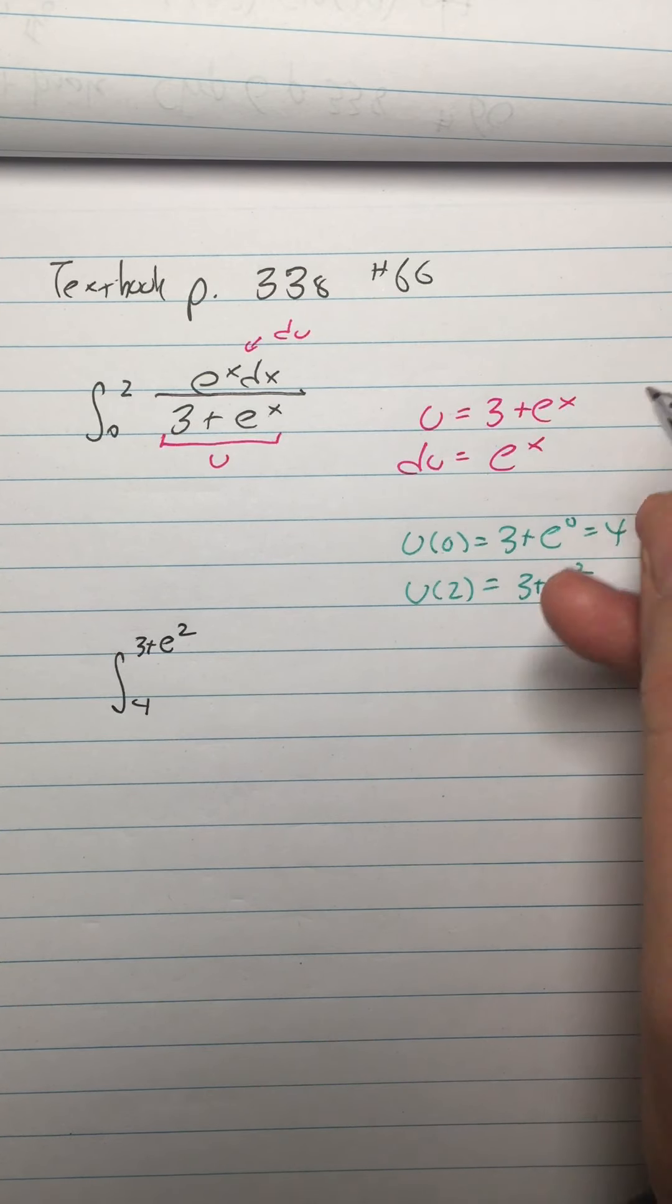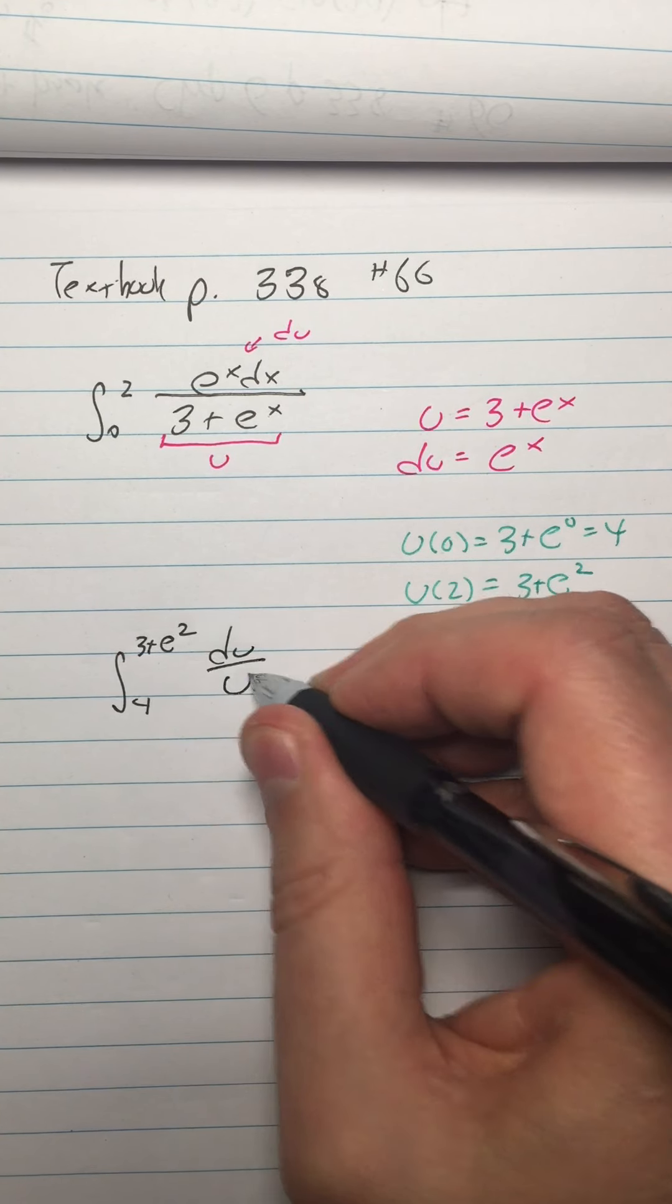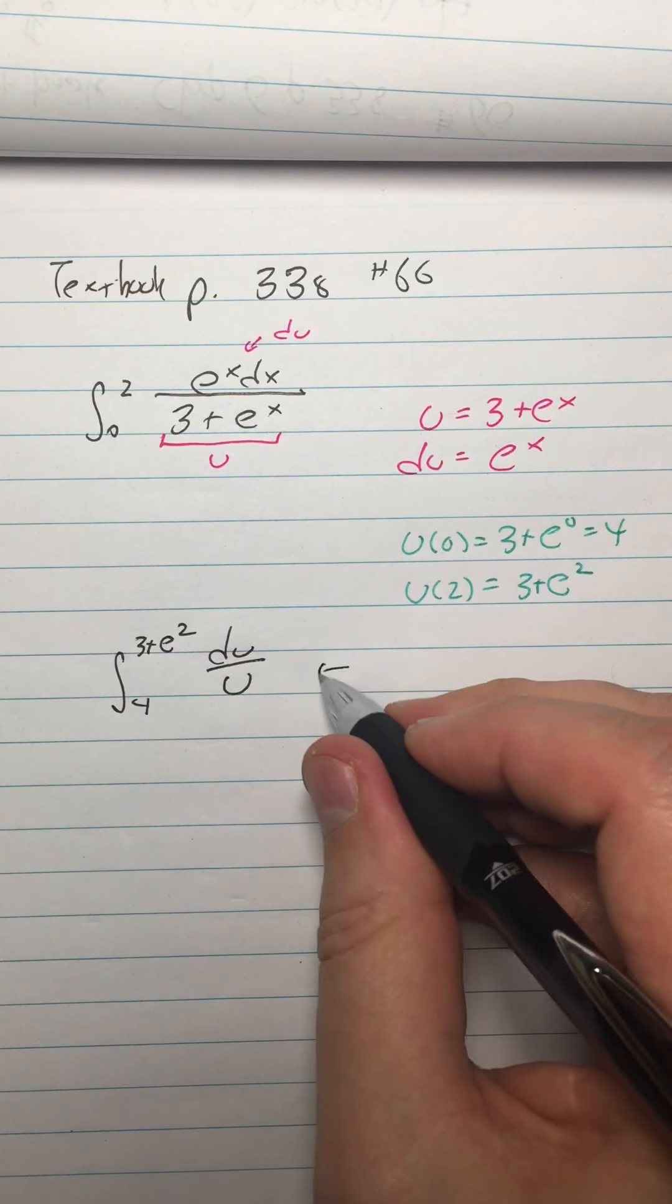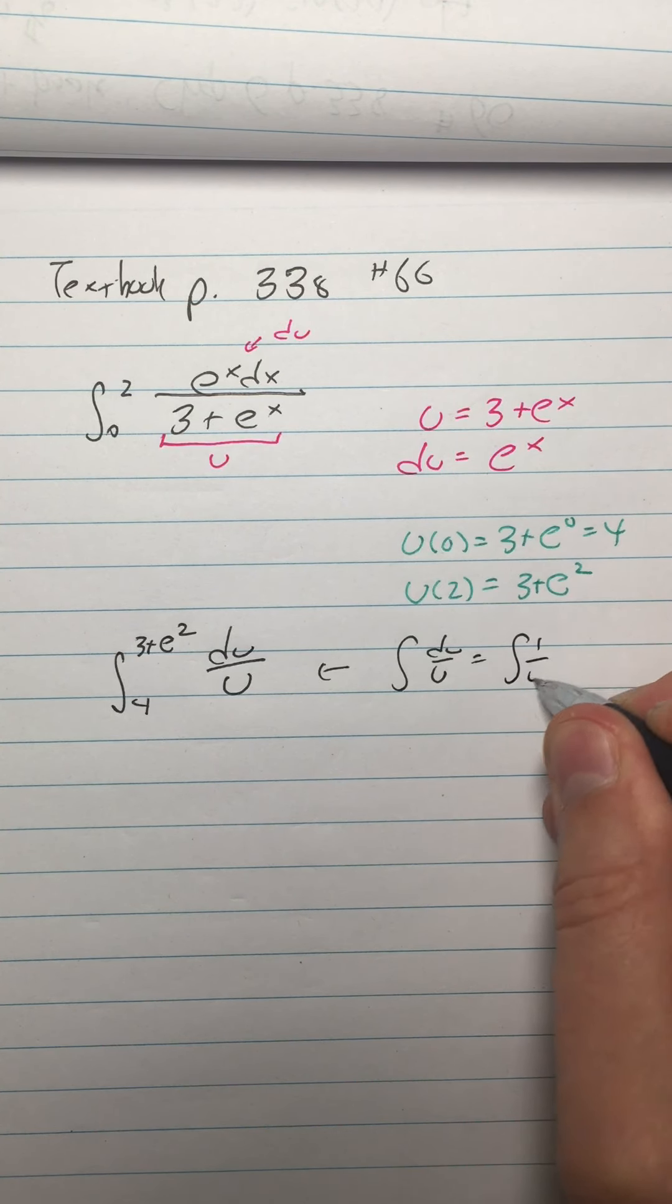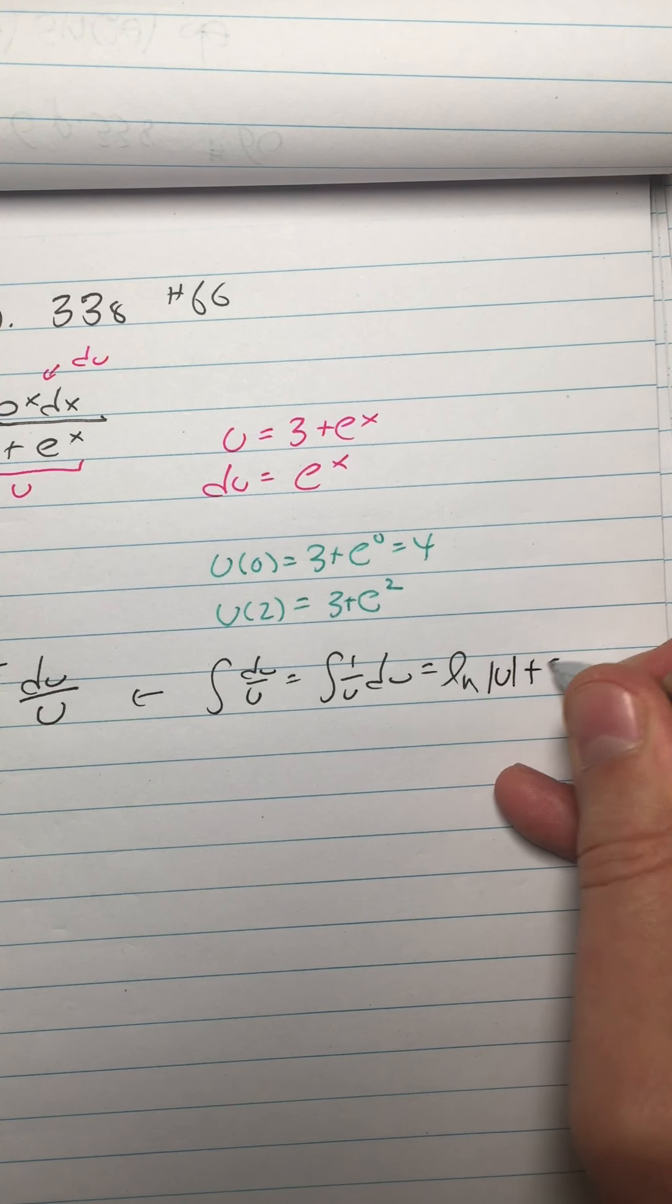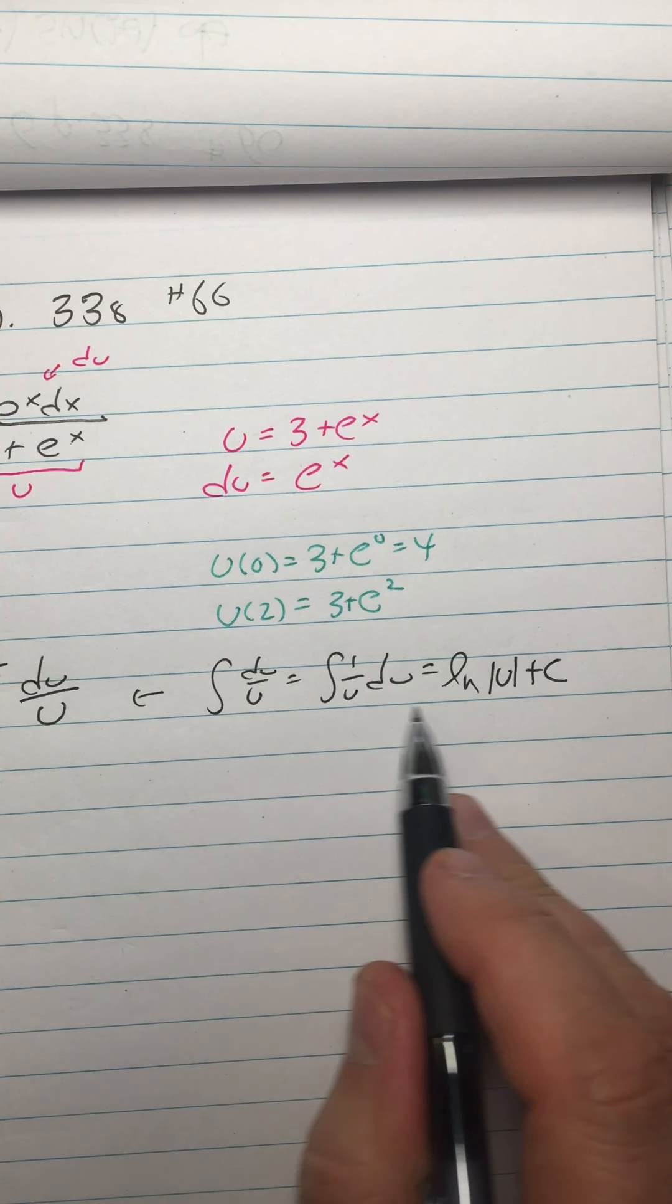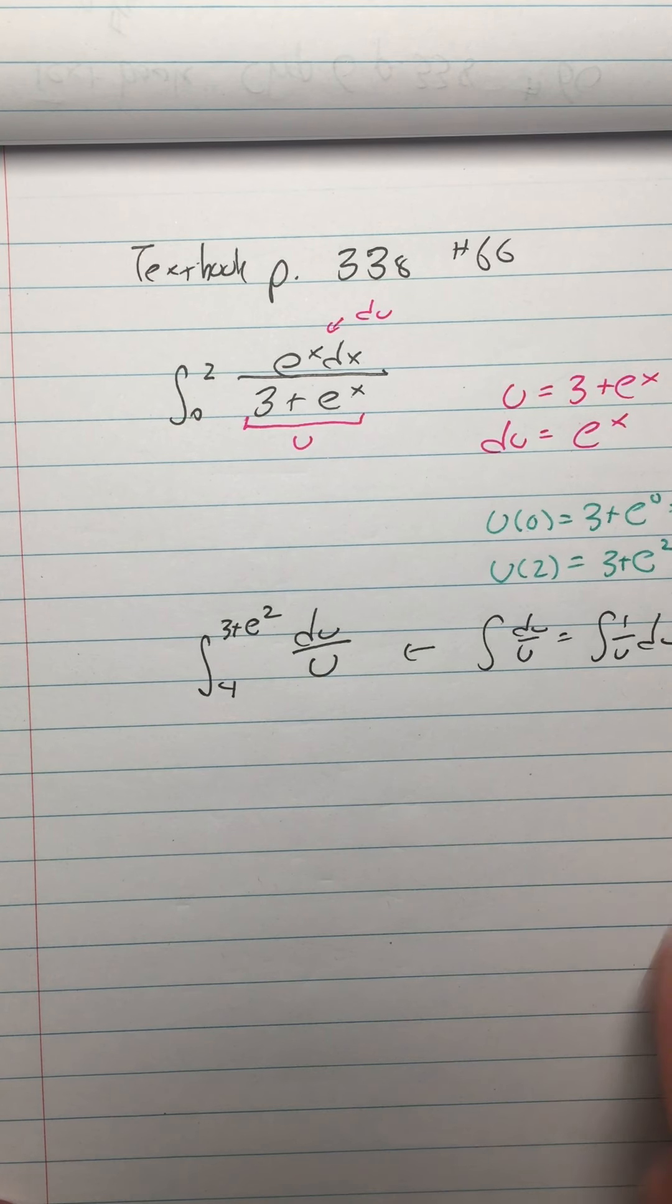So you can just decide which way you like to do it. And then I'm going to have du over u. All right, now that du over u, when you see integral of du over u, that's the same as the integral of 1 over u du, so it's going to be ln of absolute value of u. So when you see du over u, that's just ln of absolute value.